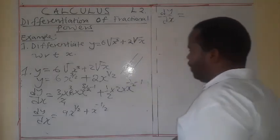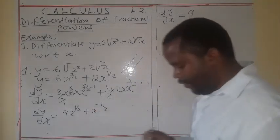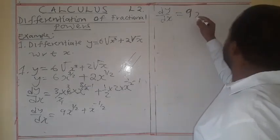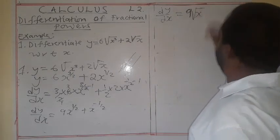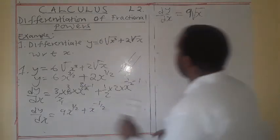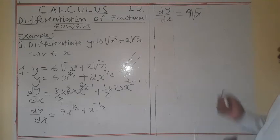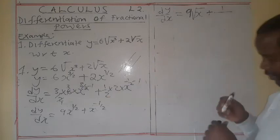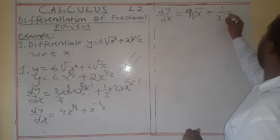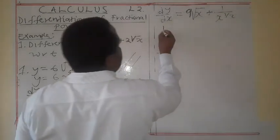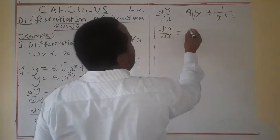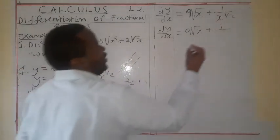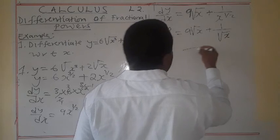So dy/dx is equal to 9 — and x to the power half is the square root — so we have 9 times the square root of x, plus — this negative means 1 over — x to the power 1 over 2. So dy/dx is equal to 9 times the square root of x, plus 1 over the square root of x. And this is our answer.